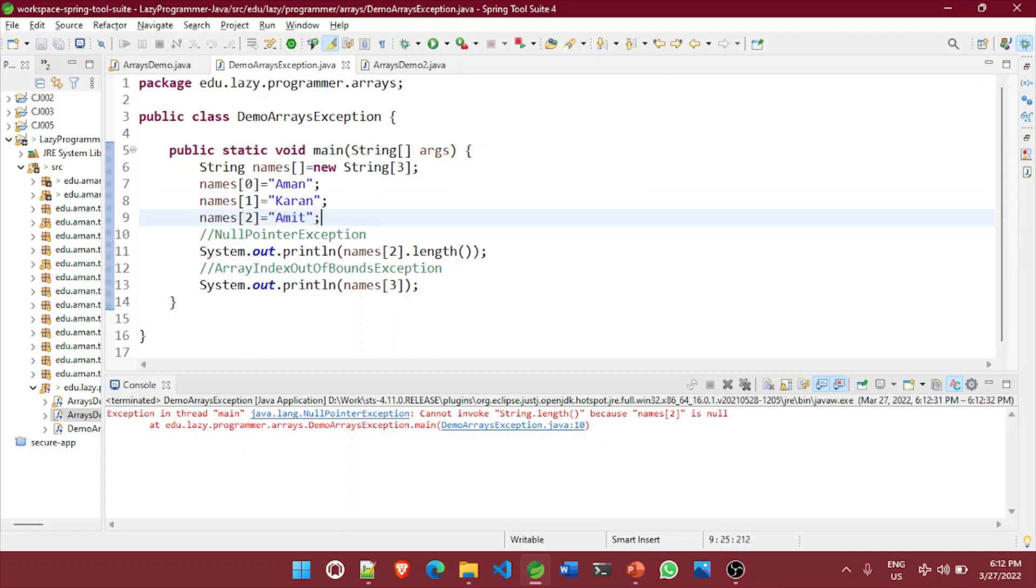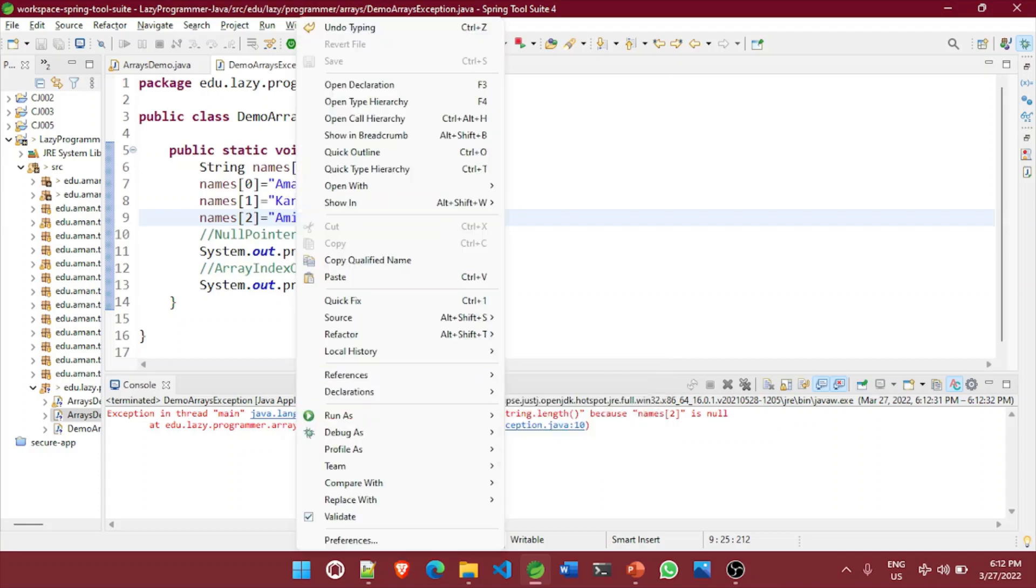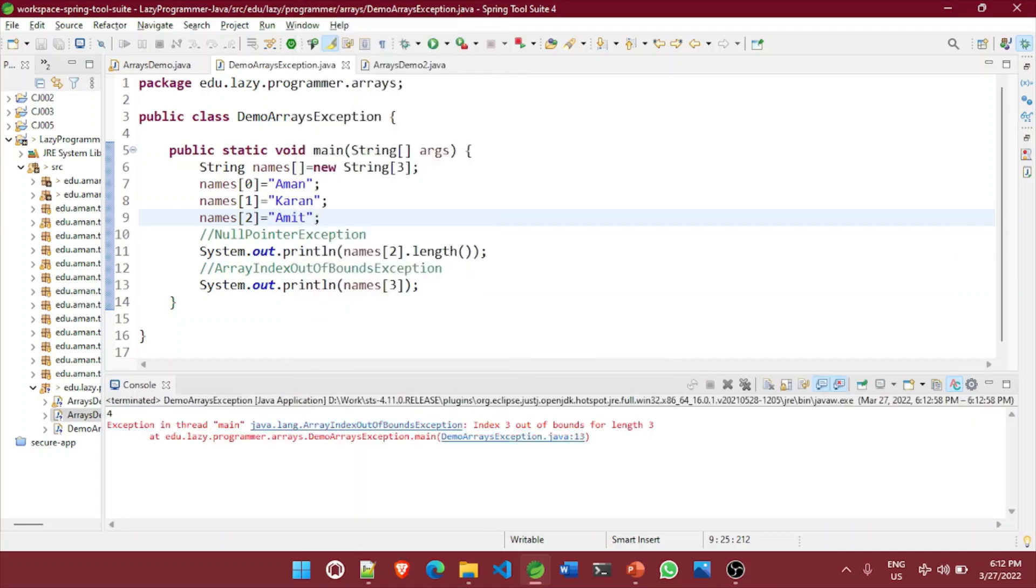Okay, so now it is having a value so it will be printing what is the length of that thing. Okay, so here you can see four is printed, but what is this and another exception has occurred. So this is the second kind of exception that you will be facing while working with the arrays, which is array index out of bound. So what we have done here, we are trying to access index three, but in the array itself, it can only store three values.